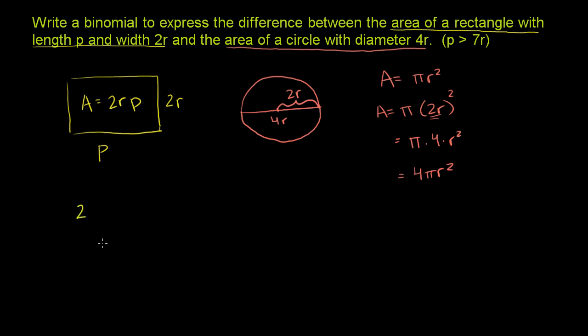If p is greater than 7r, let me write it this way. We know that p is greater than 7r. So if we were to multiply both sides of this equation by 2r, and 2r is positive. We're dealing with positive distances, positive lengths. So if we multiply both sides of this equation by 2r, it shouldn't change the equation. So multiply that by 2r, and then multiply this by 2r, and then our equation becomes 2rp is greater than 14r squared.